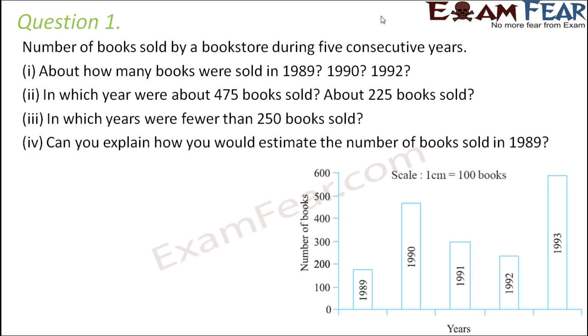We have to answer these questions based on the graph. About how many books were sold in 1989, 1990 and 1992? So 1989, 1990 and 1992. Where is it? It reaches somewhere here between 100 and 200. Now the exact point between 100 and 200 would be 150.